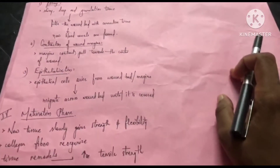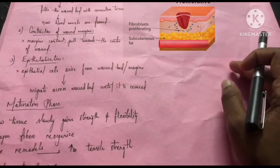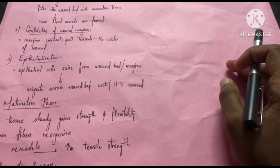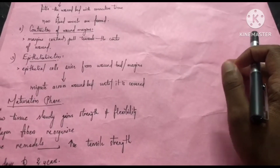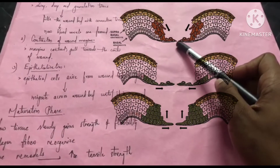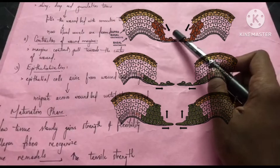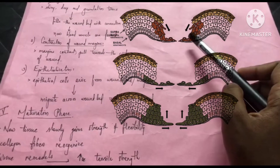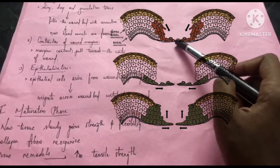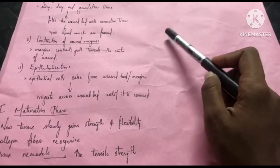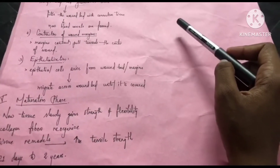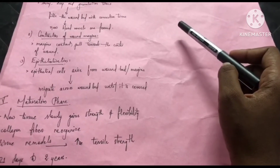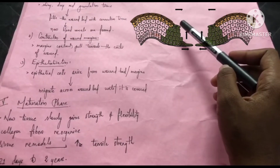The third process in the proliferative phase is epithelialization. Epithelial cells arise from the wound bed or wound margin and migrate across the wound bed. This process is called epithelialization, and it covers the wound with new epithelium.